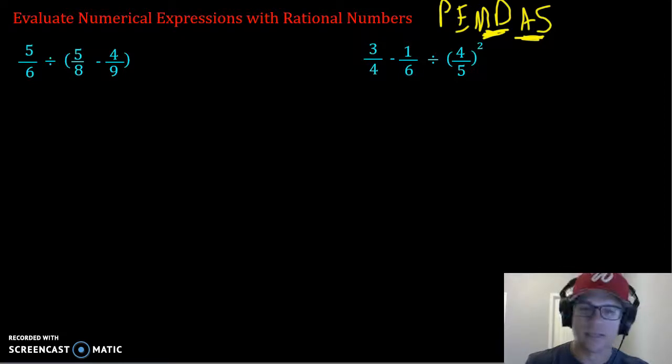So for the first example, we're going to start with our parentheses. Inside this parentheses we have a fraction, 5 eighths minus 4 over 9. In order to subtract fractions, we have to set common denominators.